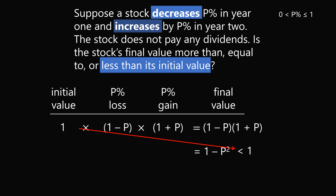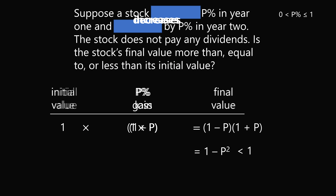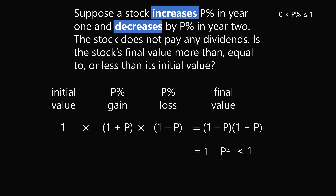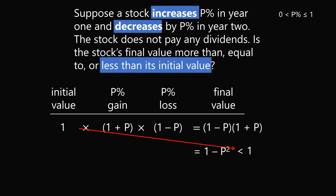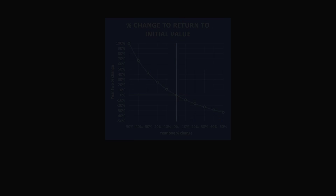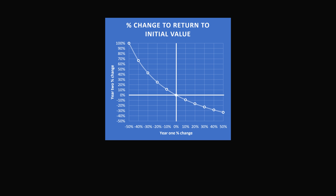Here we had a decrease followed by an increase, but we can even switch these two — an increase followed by a decrease. Since multiplication is commutative, the final value is still less than the initial value. In general, here's a chart that shows the percentage gain needed to return to an initial value. If you have a 50% loss, you need a 100% gain to return to the initial value. So percentage losses in absolute terms are much worse for your portfolio than equivalent percentage gains — and that's a money mistake you don't want to make.